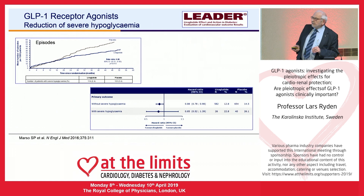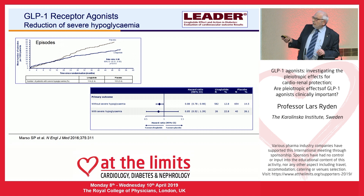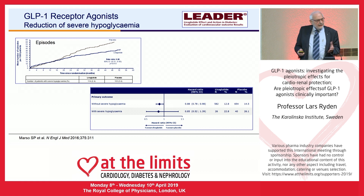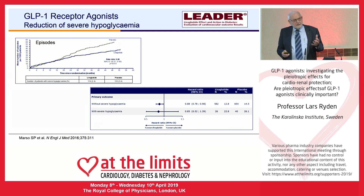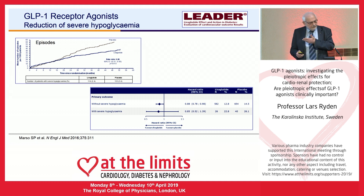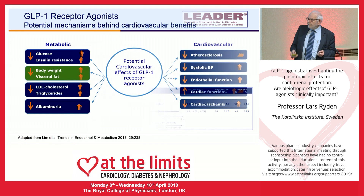Another important aspect comes from the LEADER study: episodes of hypoglycemia and severe hypoglycemia are actually lower with liraglutide. We know in cardiovascular medicine that severe hypoglycemia in a vulnerable patient can easily induce arrhythmia and mortality. So perhaps part of the benefit is rescuing patients by protecting them from severe hypoglycemia.